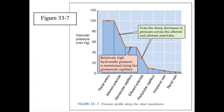We can see from figure 33-7 that glomerular capillary pressure is relatively high throughout, and peritubular capillary pressure is relatively low. Selective constriction or relaxation of the afferent and efferent arterioles allows for highly sensitive control of the hydrostatic pressure in the intervening glomerular capillary, and thus of glomerular filtration.